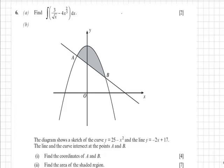Question 6a is a standard integral. We just need to get into the form that we can integrate. So 3 over root x would be 3x to the minus 1 half and minus 4x to the 2 thirds.